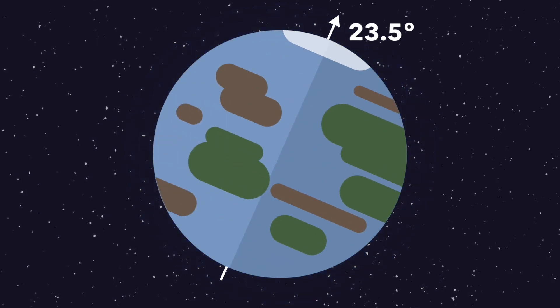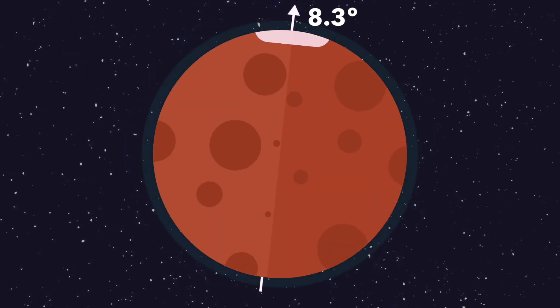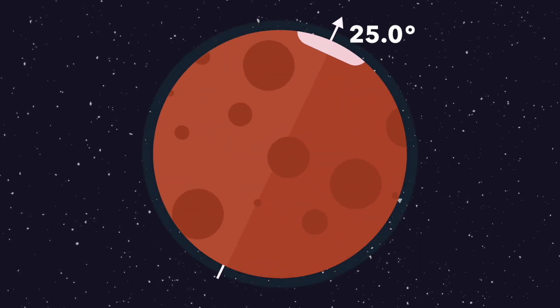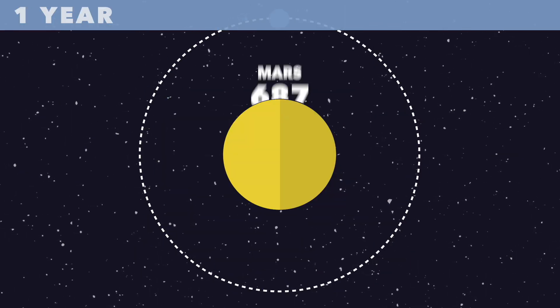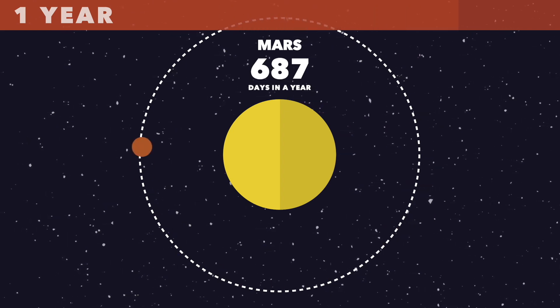Earth tilts 23.5 degrees on its axis, giving us our lovable four seasons. Mars only tilts 25 degrees. We enjoy our familiar 365-day Earth year compared to Mars' 687-day year, almost twice as long.